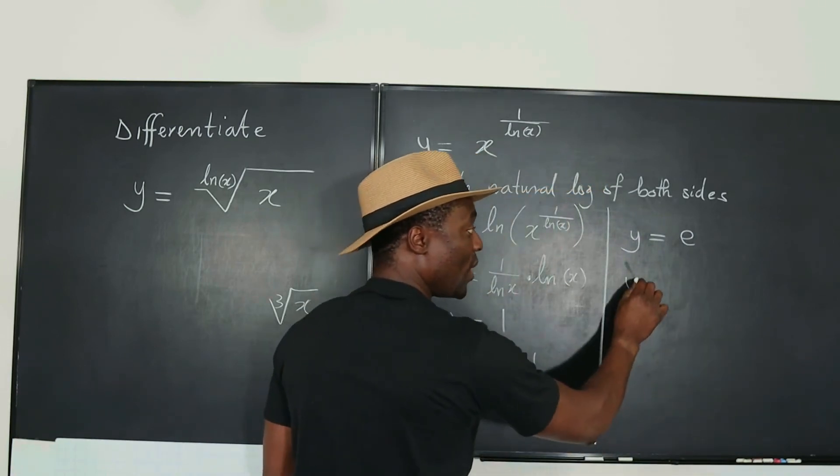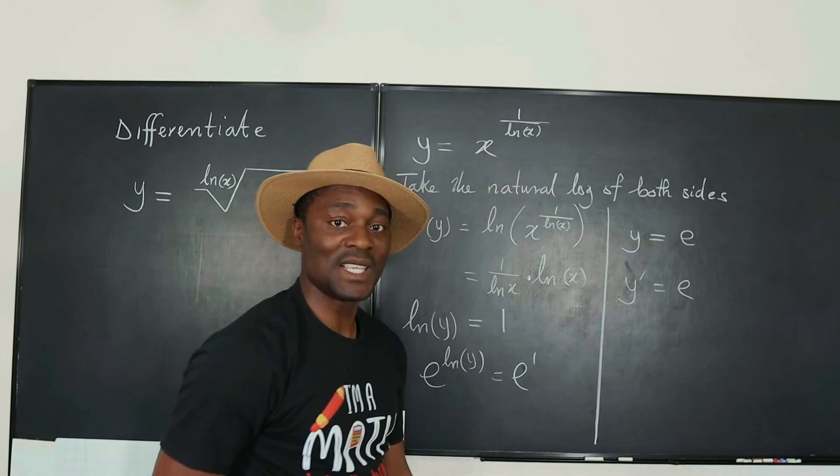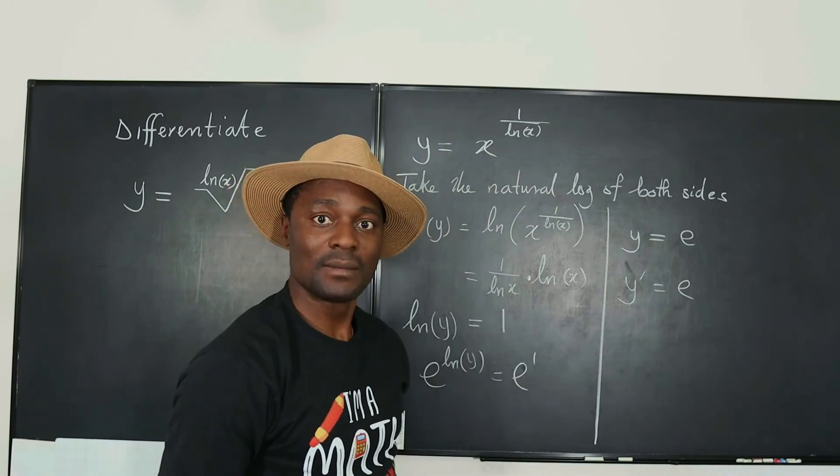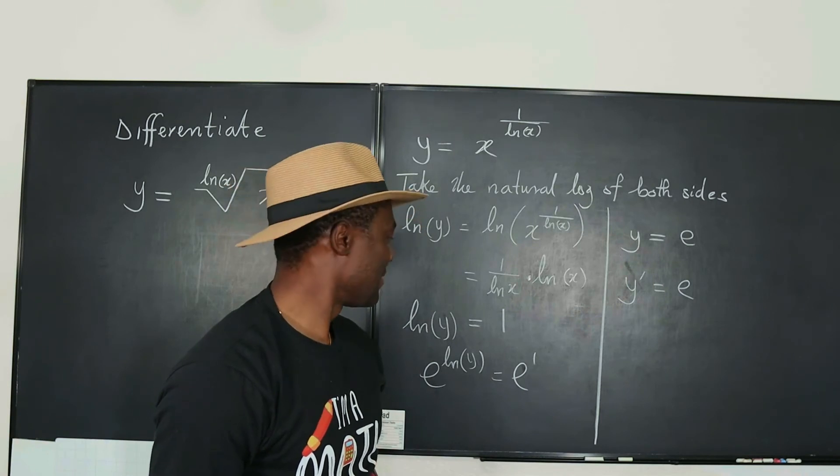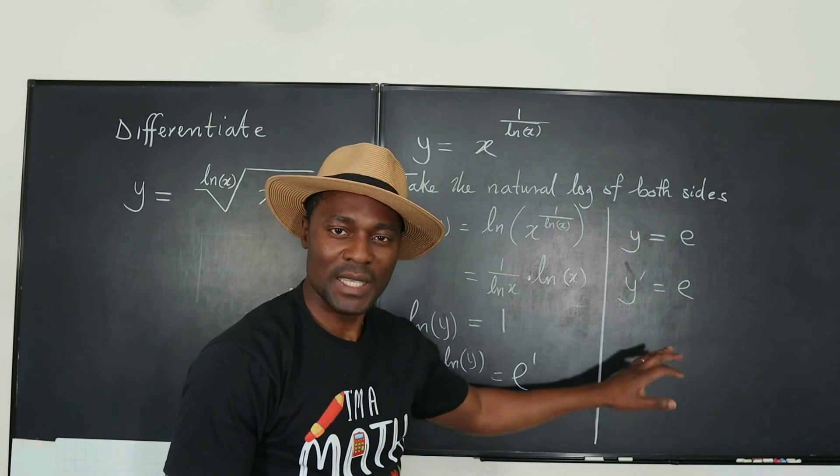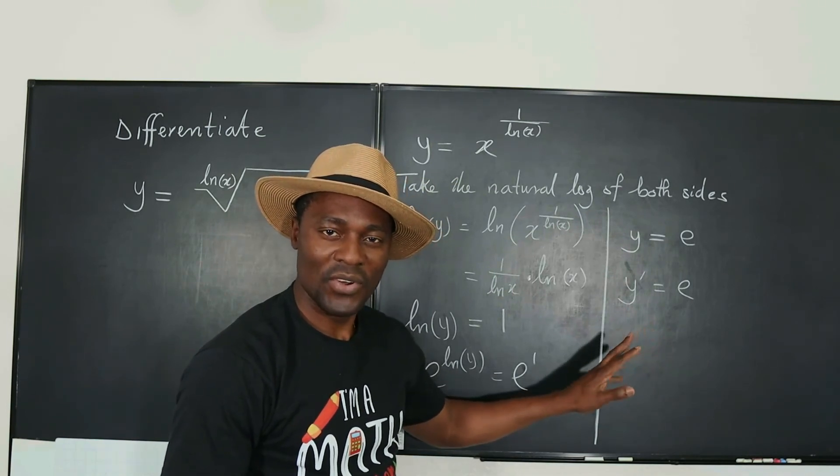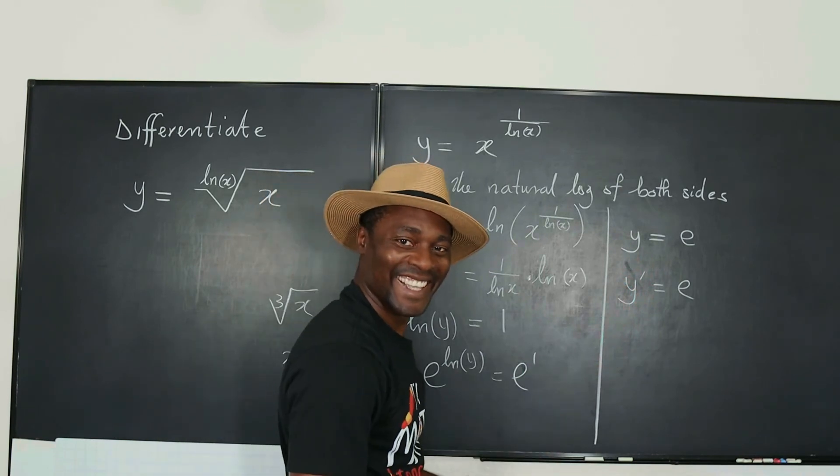Oh, so y prime is e because the derivative of e is still e. No. If y is equal to e, what is the derivative of y? Is it e or is it zero?